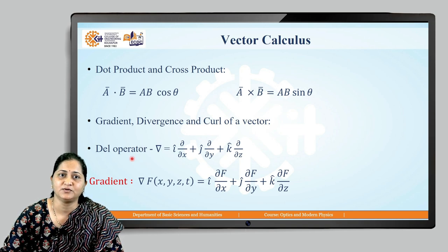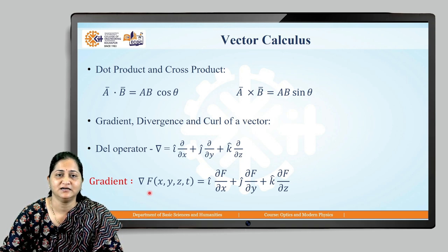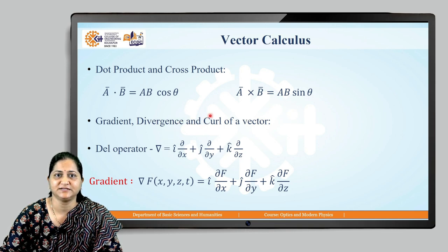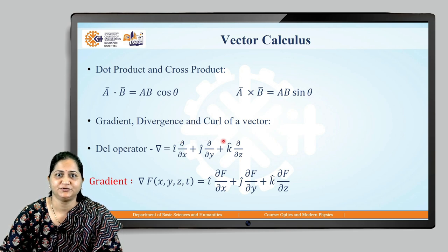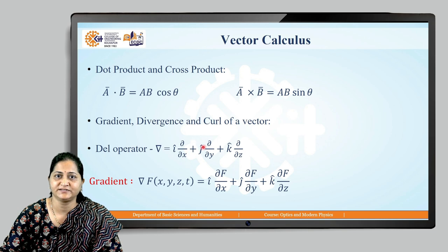Gradient is an operation performed on scalar quantities. Before we discuss gradient, let us first see what the del operator is. The del operator is given by: i·(∂/∂x) + j·(∂/∂y) + k·(∂/∂z), where i-cap, j-cap, k-cap are the unit vectors along x, y, and z directions. The partial derivatives ∂/∂x, ∂/∂y, and ∂/∂z give us the change in that quantity along x, y, and z direction.